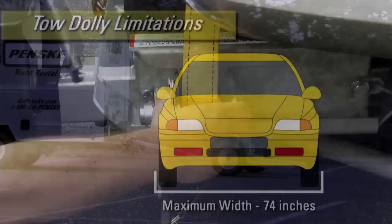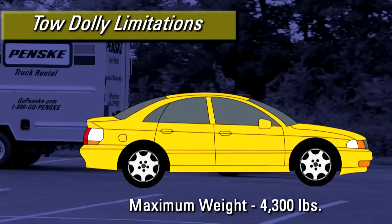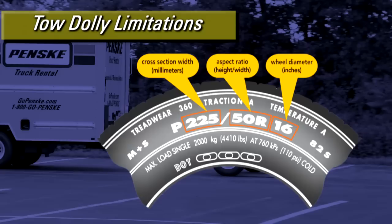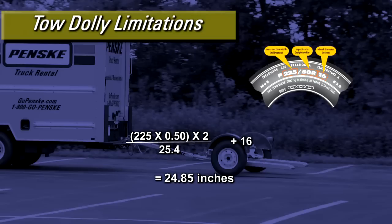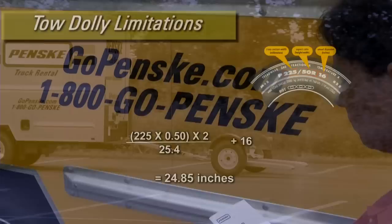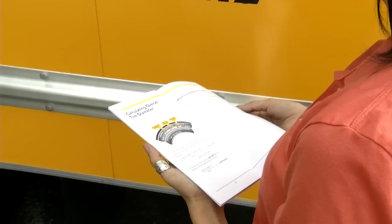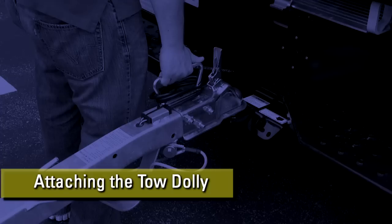The maximum width at the widest part of the front end of the vehicle you're towing can't exceed 74 inches. The vehicle's weight can't be more than 4,300 pounds. The minimum and maximum tire sizes can be determined by taking the required information from the sidewall of your tire and inserting it into the formula shown here. If the result shows that your overall tire diameter is between 22 and 27 inches, your tire size is compatible with the car carrier. Please refer to pages 28 and 29 of the Penske Towing Guide for more details, or visit PenskeTruckRental.com.